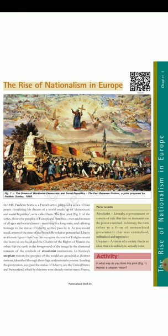Chapter I: The rise of nationalism in Europe. New words — Absolutist: literally, a government or system of rule that has no restraints on the power exercised. In history, the term refers to a form of monarchical government that was centralized, militarized and repressive. Utopian: a vision of a society that is so ideal that it is unlikely to actually exist. In what way do you think this print, Fig. 1, depicts a utopian vision?